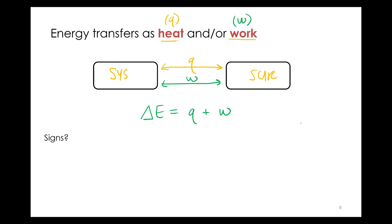So we've mentioned that with change in energy, the sign tells us a lot — it tells us which way the energy is going. Heat and work are also going to have signs that tell us something about which way the energy is going. If delta E for the system is negative, does that mean the system is losing energy or gaining energy? It's losing energy. Think about final minus initial: 50 minus 100 gives you a negative number — that tells you you lost energy. So if delta E for the system is less than zero, the system lost energy.